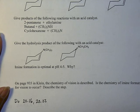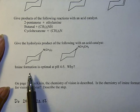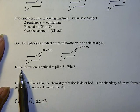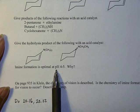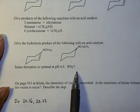Now we are ready to look at mechanisms and be able to answer questions such as: imine formation is optimal at pH of 4 to 5, and the question is why is that the case?